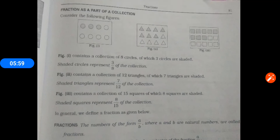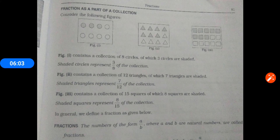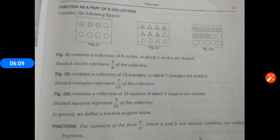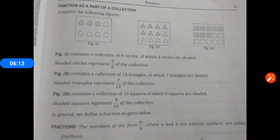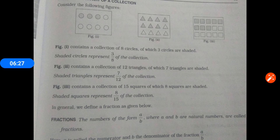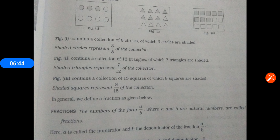Fraction is a part of a collection. Consider the following figure. In the first figure there is a collection of eight circles, of which three circles are shaded. So the shaded circles represent three-eighths of the collection. In the second figure, there is a collection of twelve triangles, of which seven are shaded — so shaded triangles represent seven by twelve of the collection. In the third, shaded squares represent eight by fifteen of the collection.